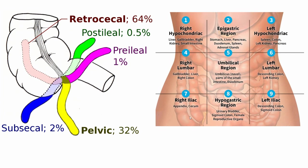In the examination, we usually divide the abdomen into 9 regions. The region we are concerned with — the location of the appendix — is number 7, which we call the right iliac area, fossa, or right lower quadrant. This location is the point where we can find the appendix region.